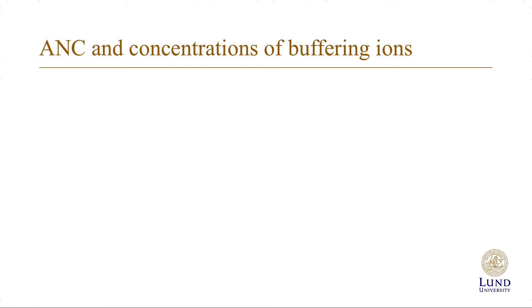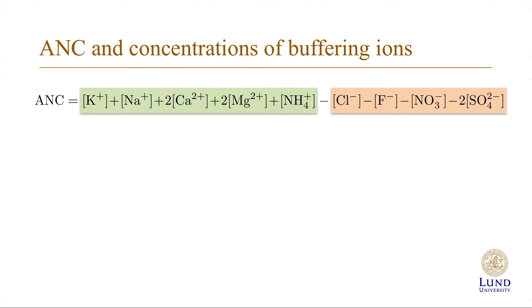The first thing we're going to do is look at the expressions for ANC and the expressions for the concentration of buffering ions. As you may recall, one of the definitions of ANC was the difference between the cations to strong bases and the anions to the strong acids. If we add a strong base such as sodium hydroxide to water, the sodium concentration will increase, but that will be the only change, which means that the ANC will increase. Correspondingly, if we add HCl, the only thing that changes is the chloride concentration, so the ANC will drop.